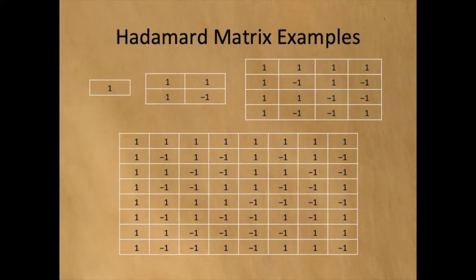Here are four examples of Hadamard matrices. Properties of these Hadamard matrices include the following: They contain only ones and minus ones. All rows are mutually orthogonal. All columns are mutually orthogonal.